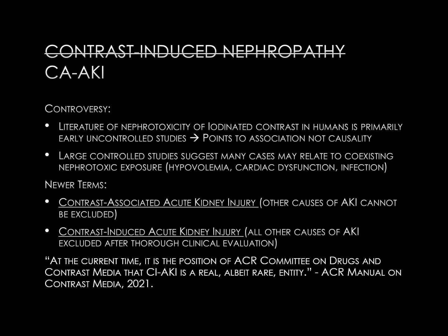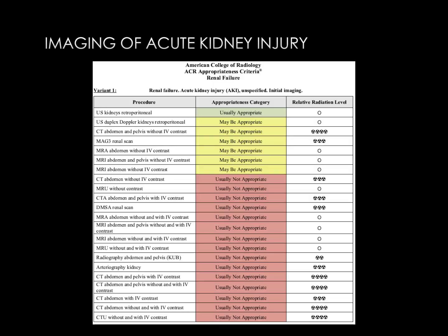The statement from the ACR is that at the current time, it is the position of the ACR Committee on Drugs and Contrast Media that contrast-induced acute kidney injury is a real, albeit rare entity. If you have a patient with acute kidney injury of unclear cause, the first and often only indicated radiology test is a renal ultrasound. This is reflected in the ACR appropriateness criteria table, which states that renal ultrasound should be the first test in the majority of these patients.